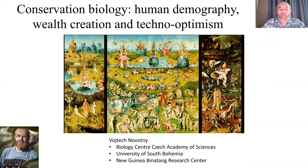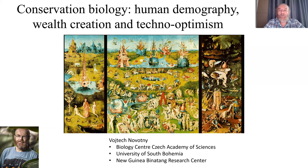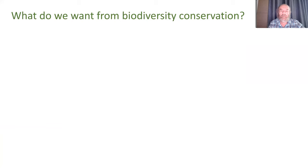Today's topic is conservation biology, looking first at big issues such as human demography, wealth creation, and the civilizational issues which are at the root of environmental problems. If we want to do something about biodiversity conservation, we need to at least understand, if not address, these issues, and then we can go to specific conservation measures for certain species or certain habitats.